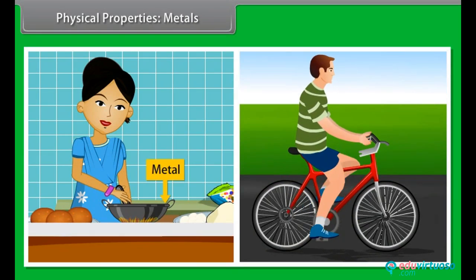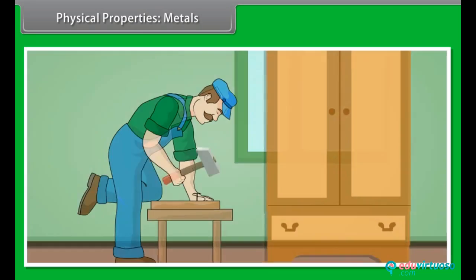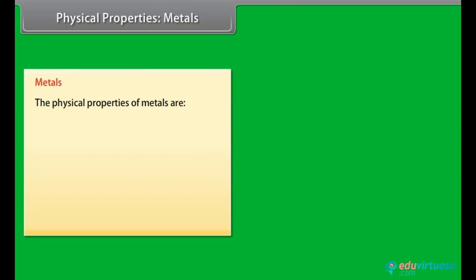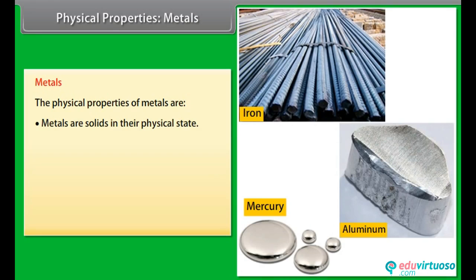You come across a lot of metals and non-metals in your day-to-day life. For example, the hammer that you use to fix nails is a metal. The nail made of iron is also a metal. Let us look at the physical properties of metals. Physical state: Metals are solid at room temperature. For example, iron, aluminum. Only mercury is liquid metal.